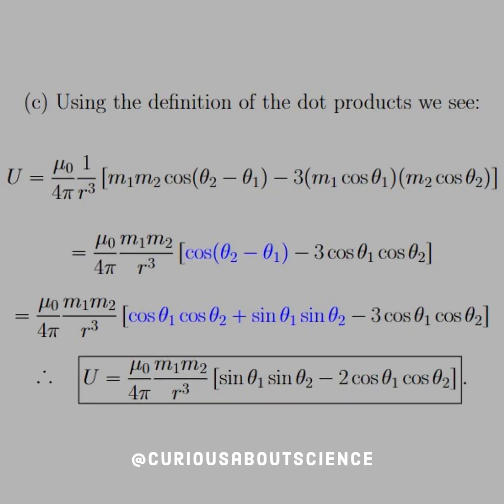Part C, using the definition of the dot products, we see what happens with these cosine angles. Now we can split up the cosine angle difference using the sum and subtraction rules of the angles. Just another trig identity. But I highlighted that in blue so we could see it settle through. Nice little cancellations, but now we get on to the more tricky part.